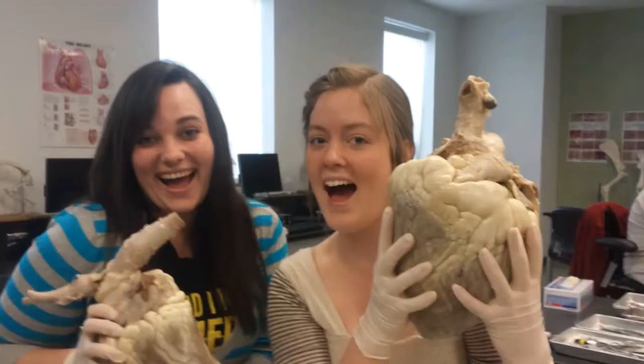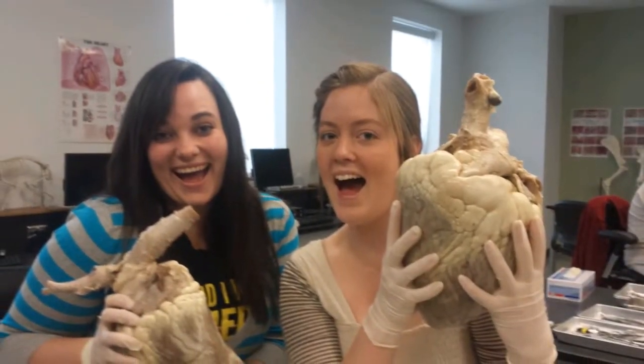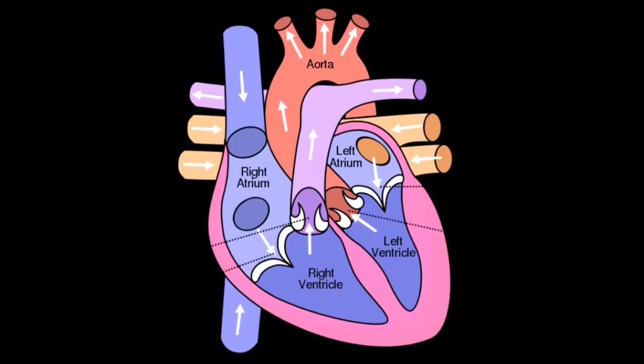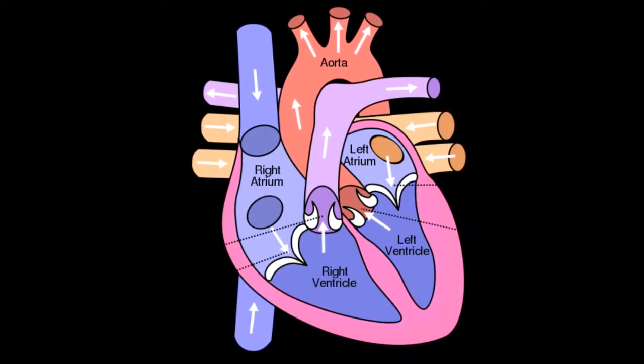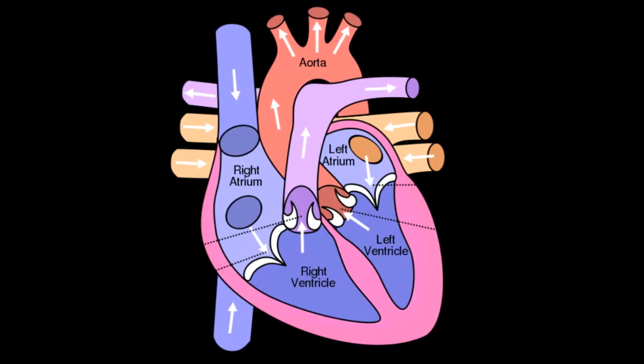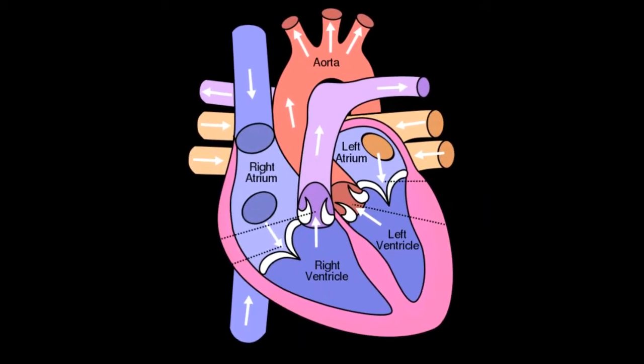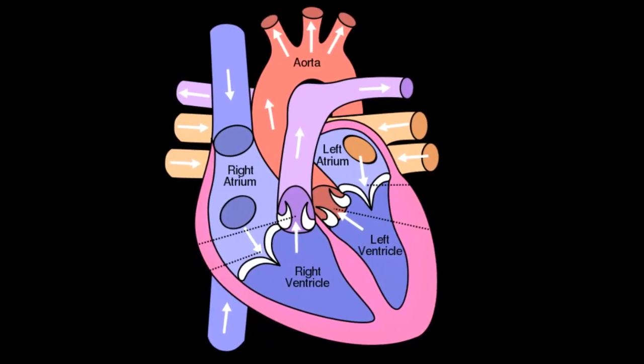I'm going to talk a little bit about the blood flow through the heart. Blood comes in through the cranial and the caudal vena cava, and the blood that comes in there is deoxygenated, so it's not carrying any oxygen, and it comes into the right atrium of the heart.